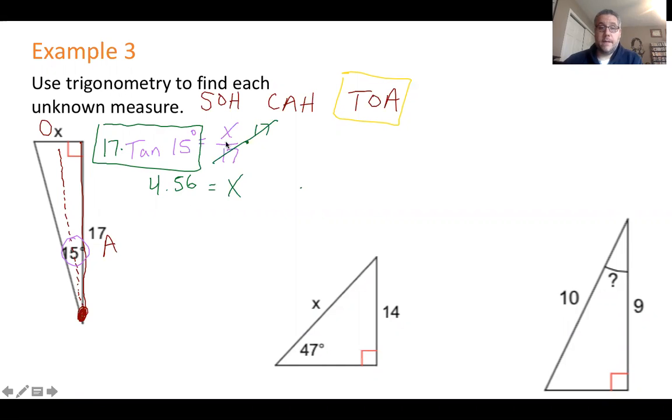So if you have an unknown side and it works out like this, where x is in the top or the numerator, you multiply both sides. This is the general format.